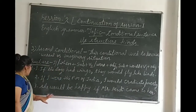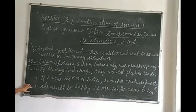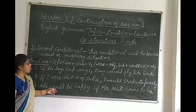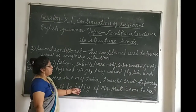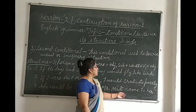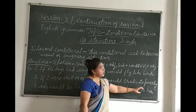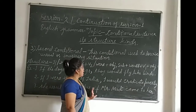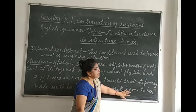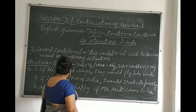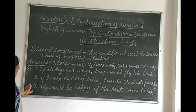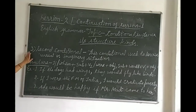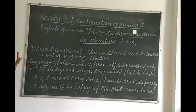Example 3: she would be happy if Mr. Modi came to her. Here, we have written the conditional clause in the second part of the sentence. This is all about the third kind of conditional sentence — the second conditional.